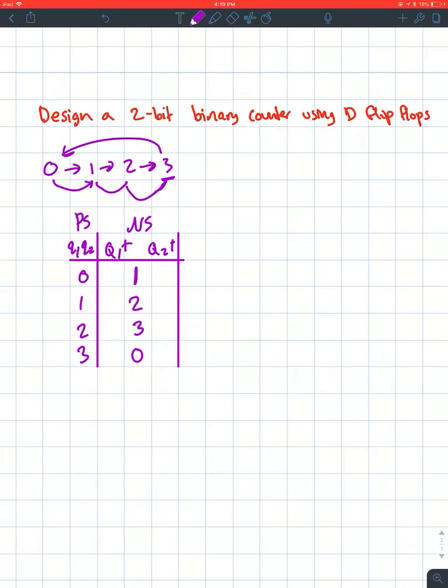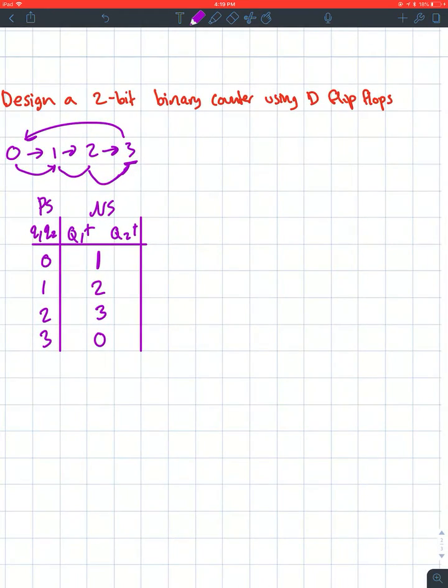This is written in normal numbers—you need to convert it to binary. My present state for Q1 and Q2: 0 is 00 in binary, 1 is 01, 2 is 10, and 3 is 11. Converting my next state for Q1 plus and Q2 plus: 1 is 01, 2 is 10, 3 is 11, and 0 is 00 again.